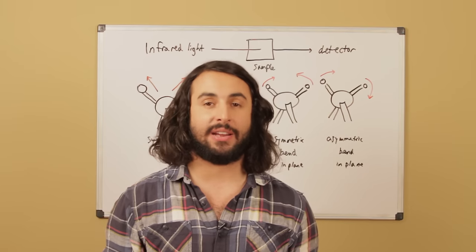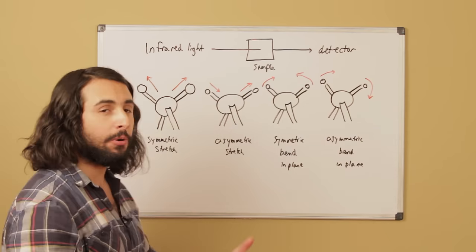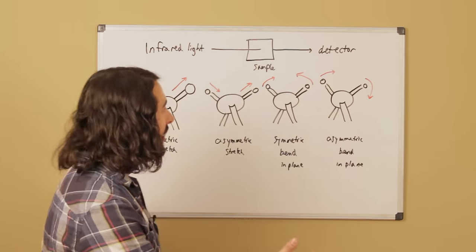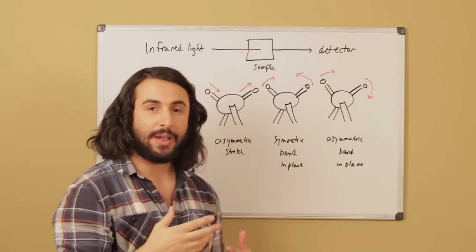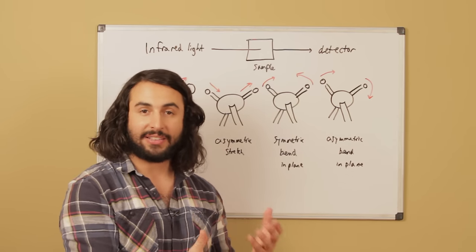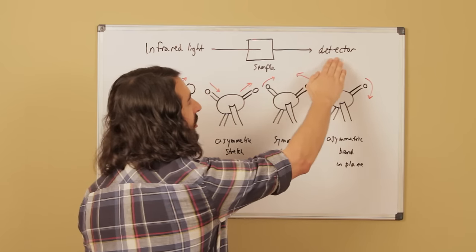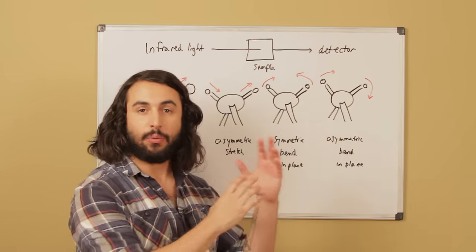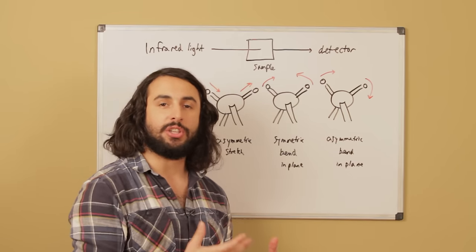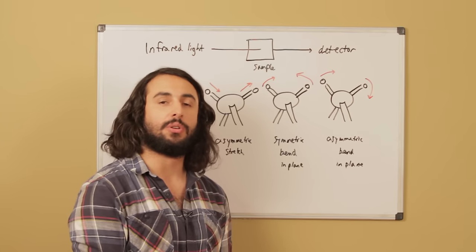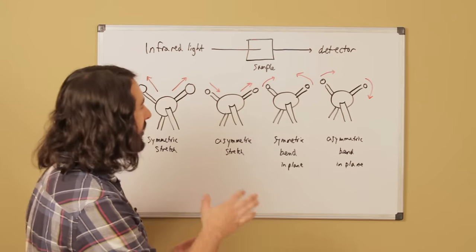IR stands for infrared, as in infrared light. So let's say we do a reaction and we have some molecule we want to figure out what it is — we irradiate a sample with infrared light. That light is going to interact in some way with the compounds in the sample and then eventually reach a detector. Some light will be absorbed by the sample, some will pass through, and this is information we can use to figure out something about the structure of the molecule.